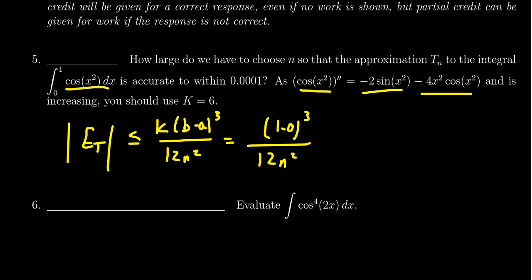Notice that sine and cosine always range between one and negative one. We need to find an upper bound for that number. Using properties of sine and cosine, this can never be worse than negative one, and same thing here. So this number can be no worse than six. That's not necessarily the best bound, but it's pretty good. We're going to use k equals six. That's what the hint tells us.